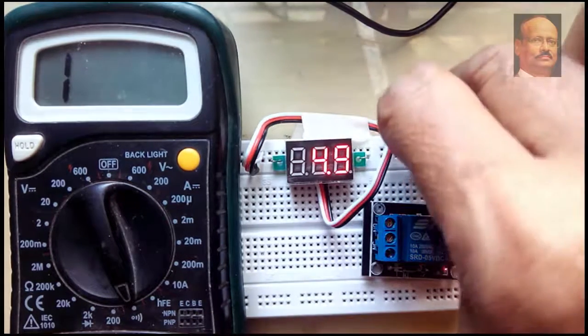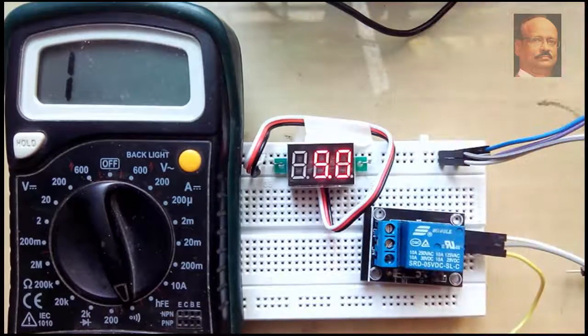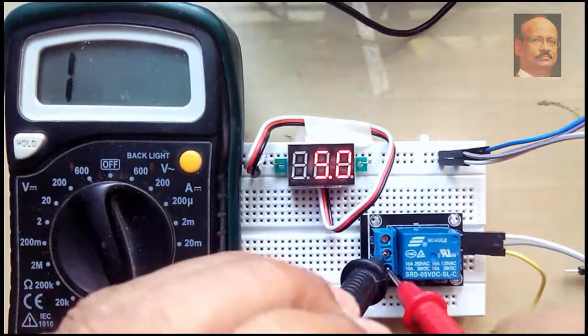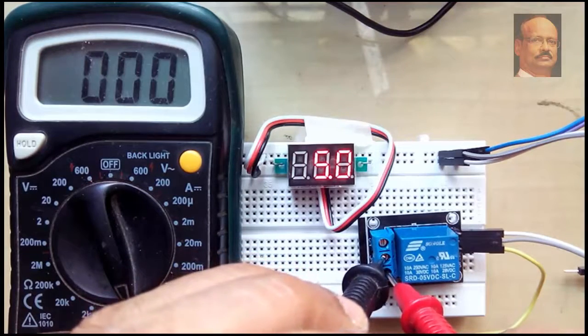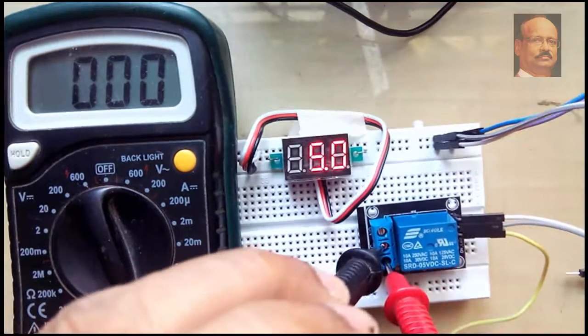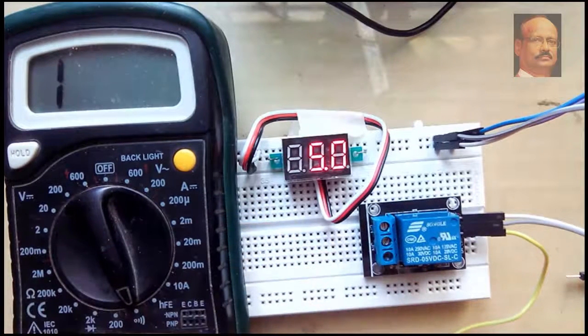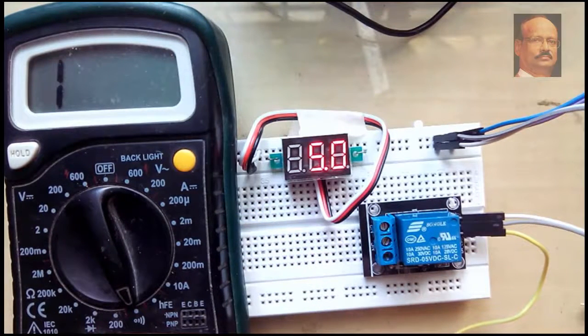Like when we remove the signal voltage, the relay is off. Once the relay is off, the connection, the contact point is from this point to this point. This is how the NO and NC contacts are behaving.